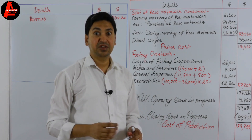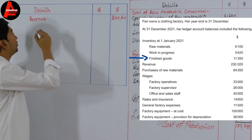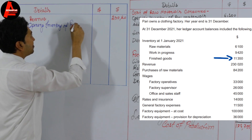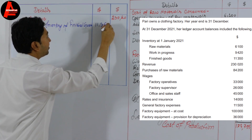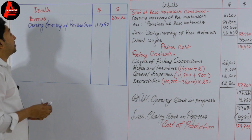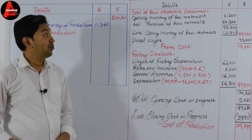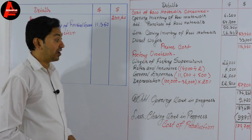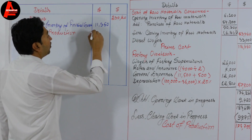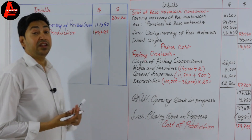We don't have all the items; whatever we have in the question we will take to calculate the cost of sales. We have opening inventory of finished goods — the amount is 11,350 dollars. Now we add cost of production. It is not in the question; we calculated it in the manufacturing account — it is 173,795 dollars.